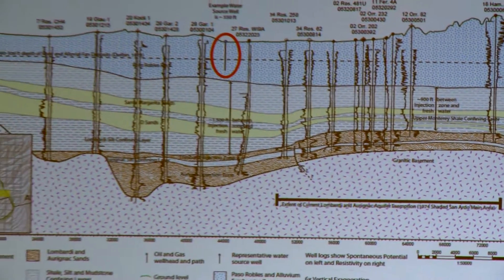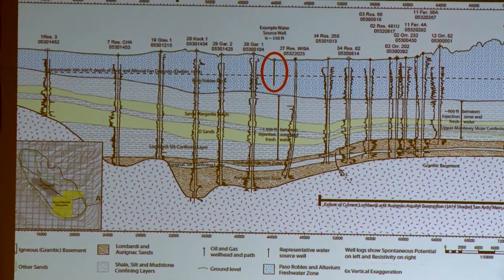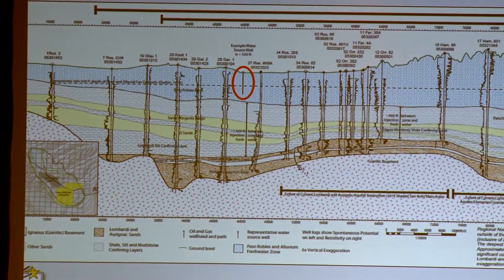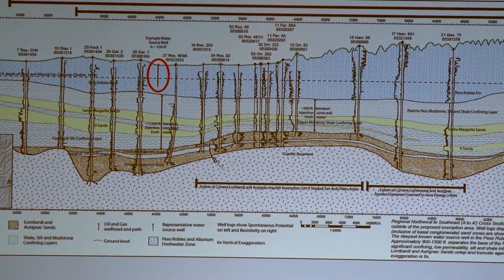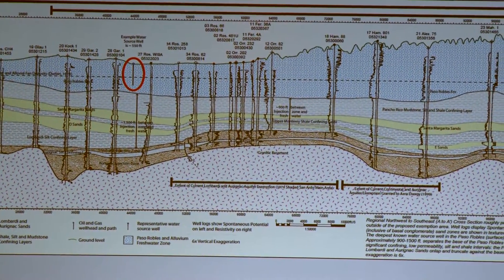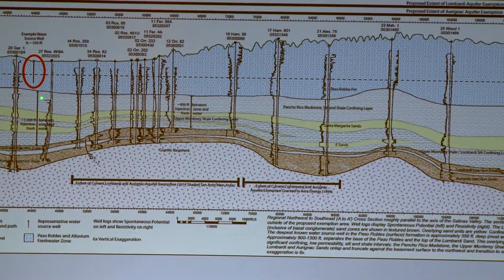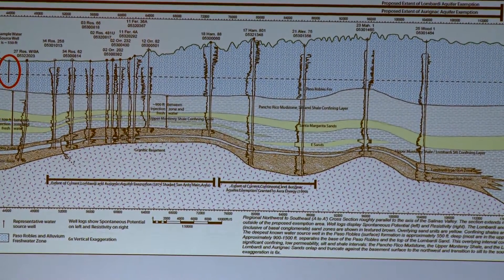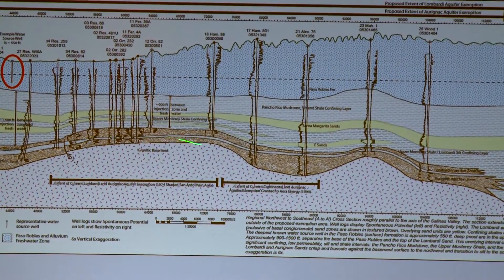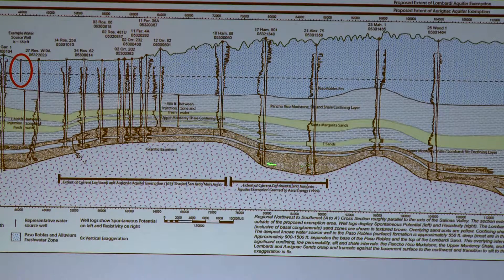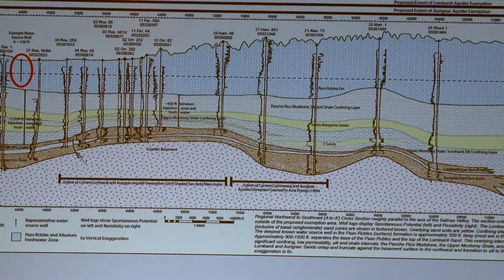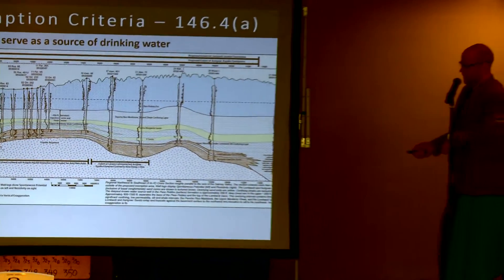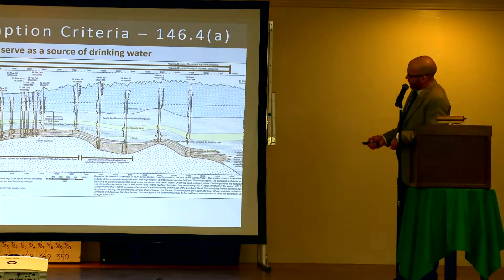Here's one of those cross-sections. If you took a layer cake and cut it in half and looked at it from the side, you'd see all the different layers — a cross-section is very similar in the sense that we're hypothetically cutting the earth in half and looking at all the different geologic layers. This cross-section goes through the proposed exemption area from northwest to southeast. We see the light blue Paso Robles formation and a sequence of low permeability zones with a few sands, and then finally we get down into the Lombardia and the Aranac. Here's an example water well drilled to 550 feet into the Paso Robles, with a substantial vertical distance separating the bottom of that well and the Lombardia.